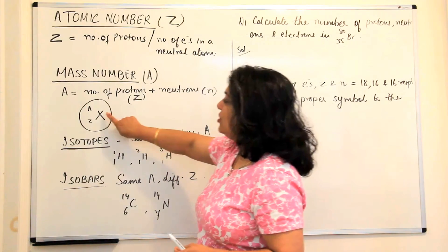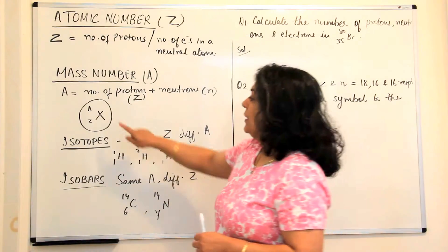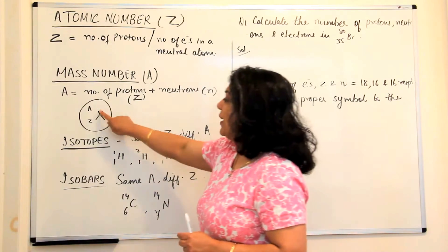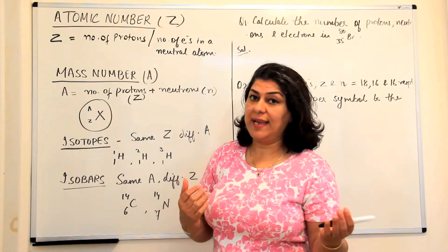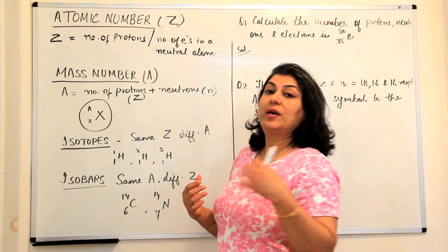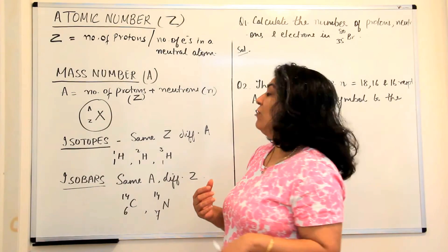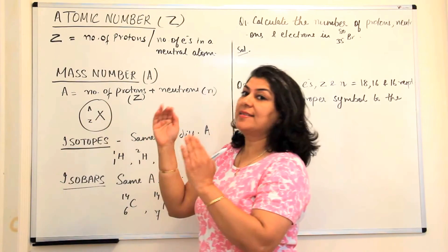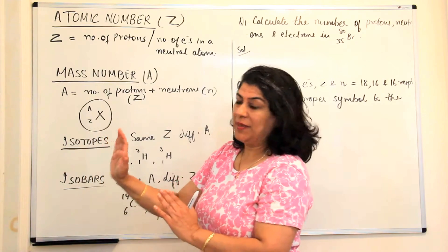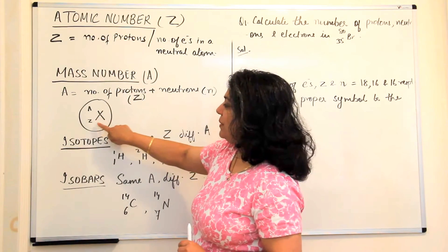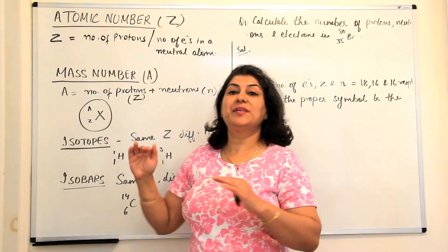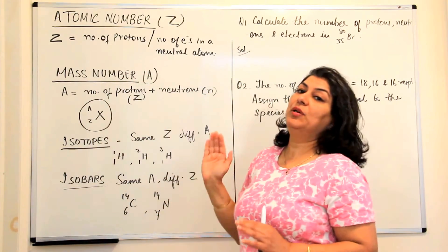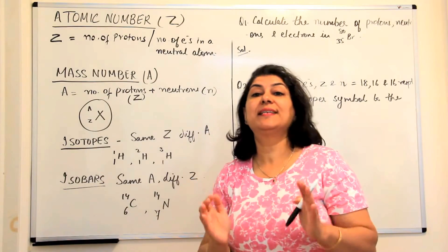Once you know the atomic number, mass number, and the symbol of the element — let us say the symbol is X — how do you represent an element? You write the symbol of the element: for sodium it is Na, for potassium it is K, for carbon it is C, for hydrogen it is H, for chlorine it is Cl. The atomic number Z is written as a subscript before the symbol of the element, and the mass number A is written as the superscript above it. Both of these are written before the symbol of the element. This is how we represent an element.